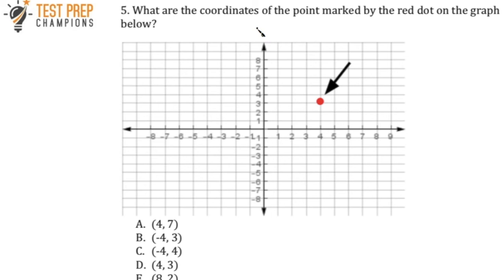Question five: what are the coordinates of the point marked by the red dot on the graph below? Pause the video, try to figure this out, and then I'll go over it. The first thing that we want to know about reading graphs is that you've got this horizontal line here on a graph, which is called our x-axis. You've got the vertical line, or the line that goes up and down, which is the y-axis.